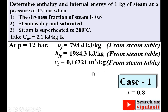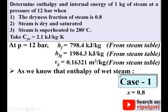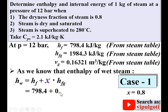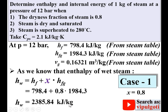The enthalpy of wet steam is: hw = hf + x·hfg = 798.4 + 0.8 × 1984.3. Calculating this gives the enthalpy of the wet steam in kJ/kg. This is the first answer for case 1 — box this value.